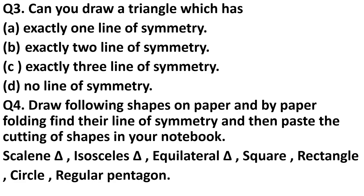Question 4 is an activity: draw the following shapes on paper, find their lines of symmetry by paper folding, and paste the cuttings in your notebook. Use colored paper if available, or plain white paper. Cut the following shapes: scalene triangle, isosceles triangle, equilateral triangle, square, rectangle, circle, and regular pentagon. Find the lines of symmetry by folding, make a dark crease, and paste the cutout in your fair notebook.